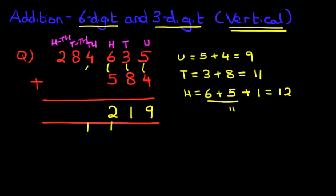Now we're going to add the thousands. We've got four plus zero. But don't forget the one over here. Four plus one is five. The ten thousands remains eight and the hundred thousands remains two.